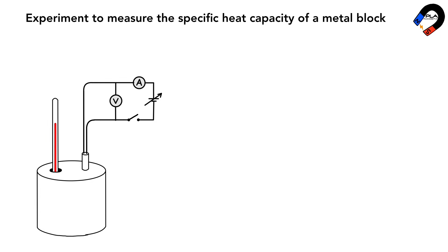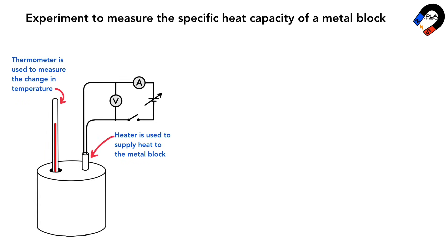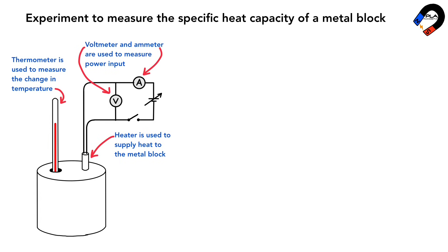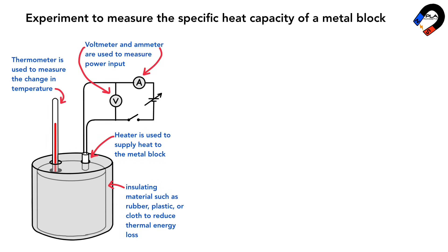For the experiment to measure the specific heat capacity of a metal block, we set up the apparatus as shown in the diagram. The thermometer is used to measure the change in temperature. The heater is used to supply heat to the metal block and is connected to a voltmeter and an ammeter to measure the power input. The metal block is insulated with insulating material such as rubber, plastic, or cloth to reduce thermal energy loss to the surroundings. The stopwatch is used to measure the time it takes for the temperature to change.